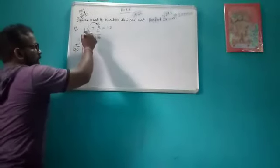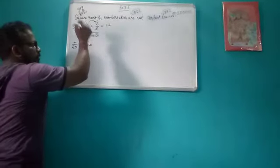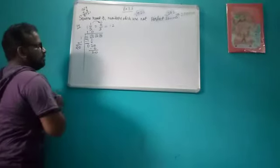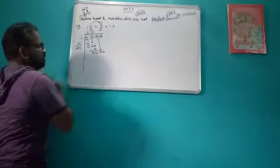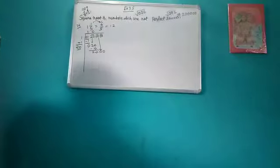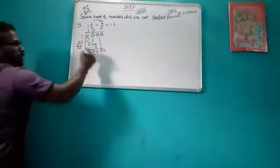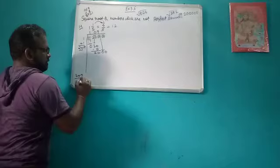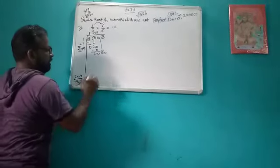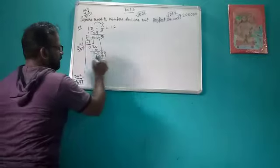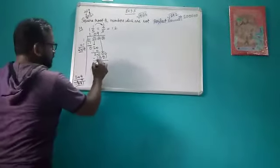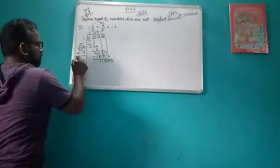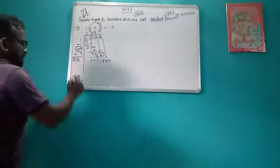We will put a zero, and since decimal values have started we will put a decimal. Zero will come here so it is 20. Then again we will bring that pair — double zero — now this becomes 2000. We look for the value nearest to 2000: 209 into 9 gives 1881. So 1881 is your value, and when you subtract it you will get 119.